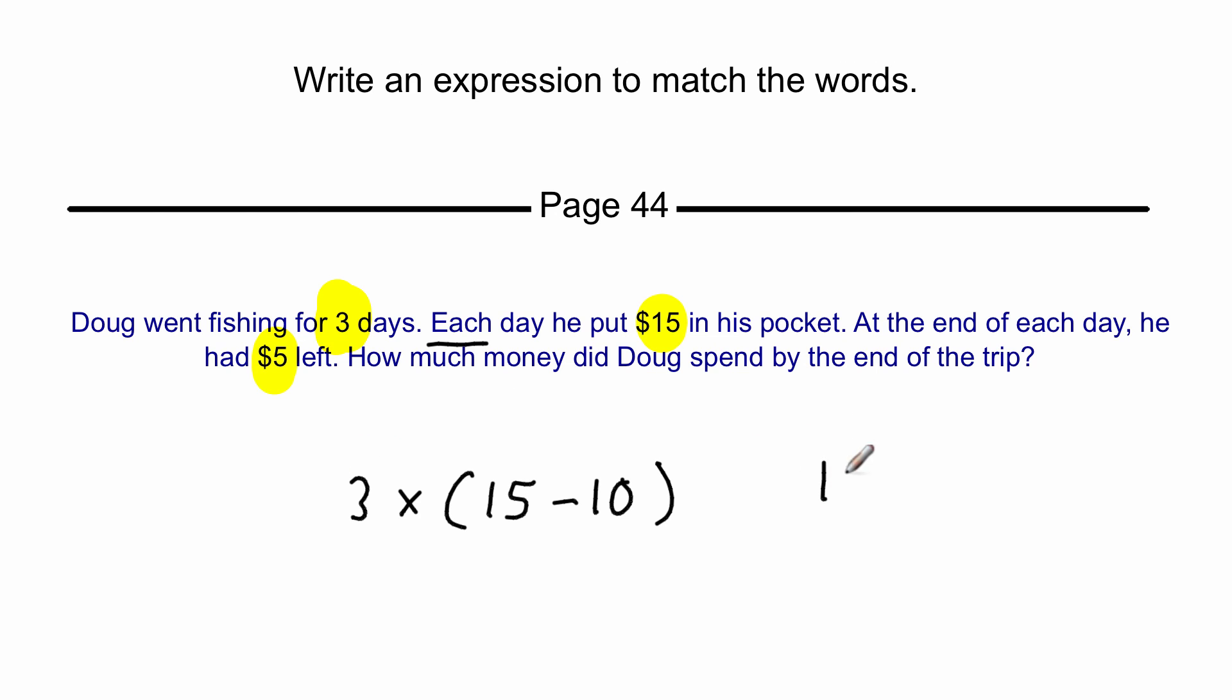You can also write that as 15 minus 10, and then multiplying it by three. Each way is fine, but as long as you put parentheses around these because you have to subtract this first, you have to do the subtraction 15 minus 10 to get five, and then you're going to multiply it by three.